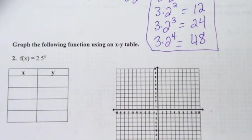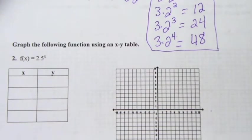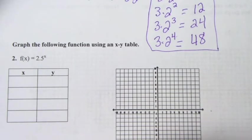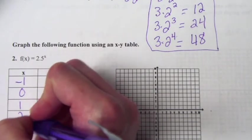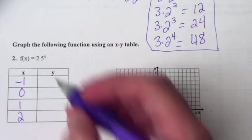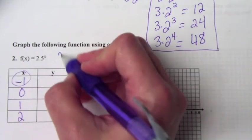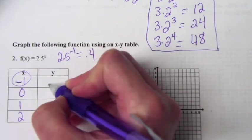Number two. On the test tomorrow, I will give you the table of values because on exponential functions it's very easy — they go off the graph very quickly, so I'll give you those values so that it will fit on the graph. The values that work best for this one are negative 1, 0, 1, and 2. If we plug in negative 1, we do 2.5 to the negative 1 power, and we get 0.4.